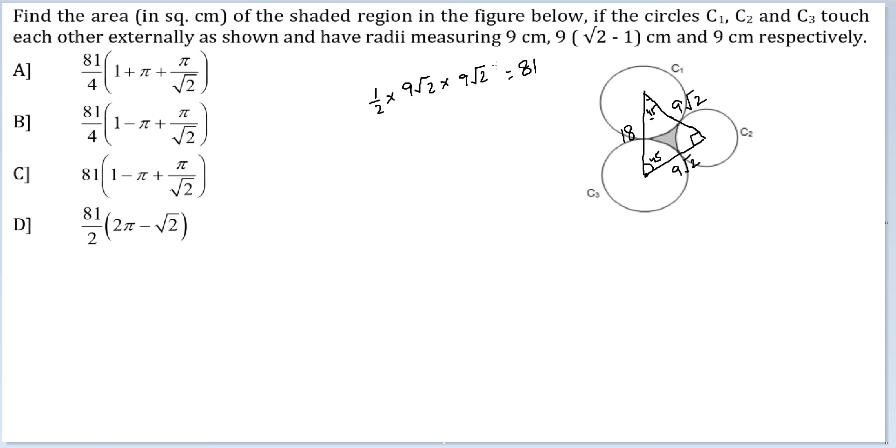So you have to remove a quarter circle with radius 9 which will have an area of 1 by 4 pi 81 and with 9 root 2 minus 1 the area would be 1 by 4 pi 81 times the square of this which is 3 minus 2 root 2.